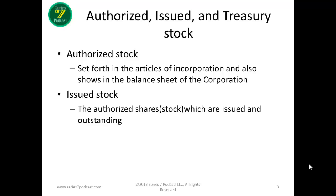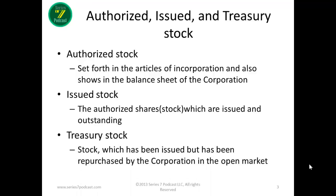That stock is issued for money — in the case of you as a stockholder buying a new issue of stock — or it can also be issued to officers, directors, and founders of the company for services rendered. Either way, there has to be a value placed on the stock when it is issued. Treasury stock is simply stock that has been issued but has since been repurchased by the corporation in the open market. Treasury stock is not used in calculating the earnings per share of a corporation. Also, treasury stock does not have voting rights.